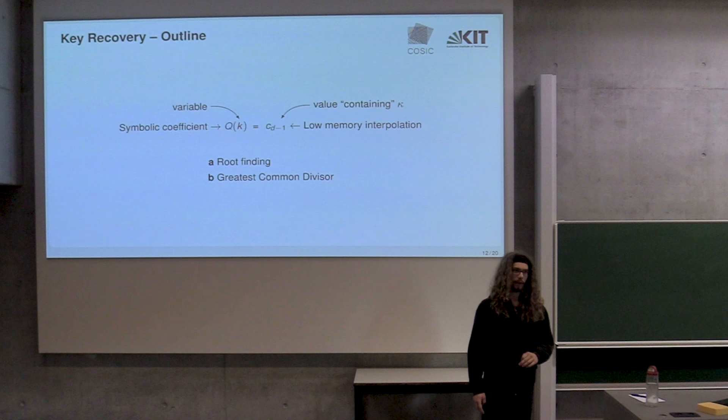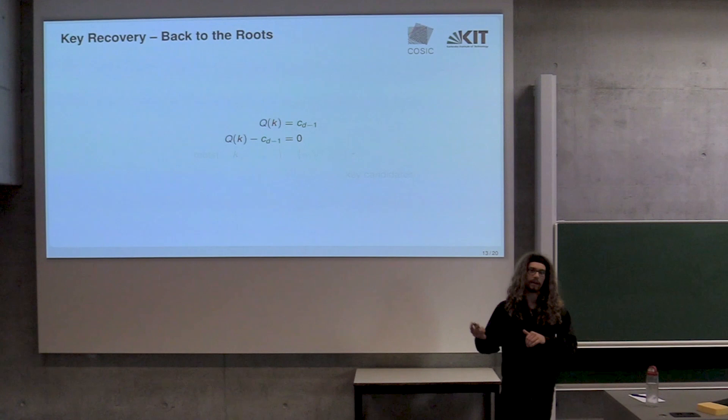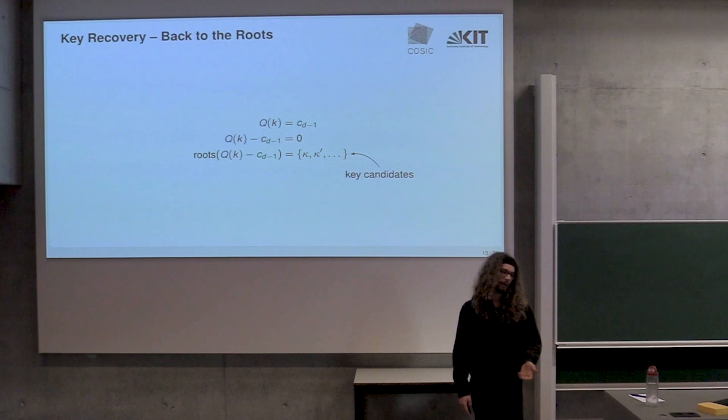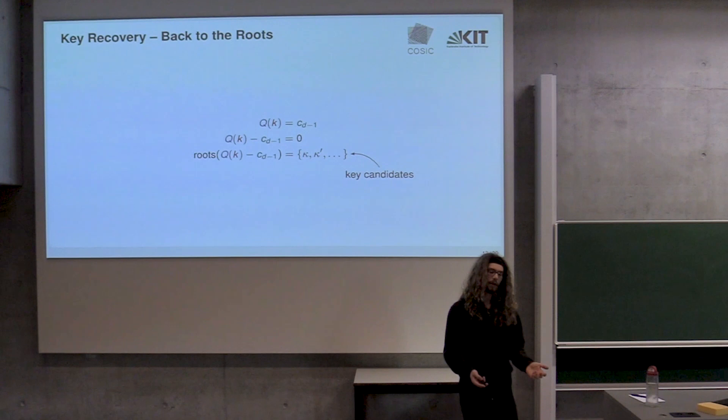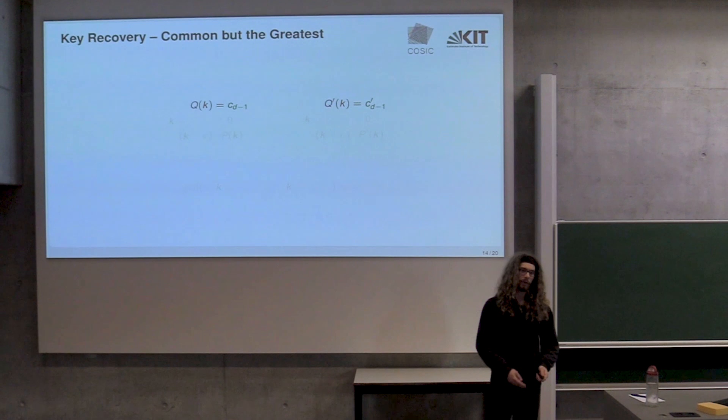On one hand side, we have a polynomial in K, what is supposed to be the key. On the other hand, we have a value that encodes in a certain way this key that we want to get. They're supposed to be the same thing. We have one equation in one unknown, so we can solve it. There's two approaches to solving this. The first approach is we use a root finding method. The second approach is we try and apply the GCD, the greatest common divisor. The first thing to observe - I just set up this equation. We rearrange it and this is a polynomial equation.